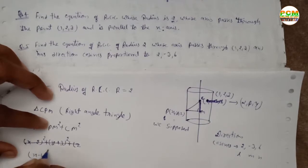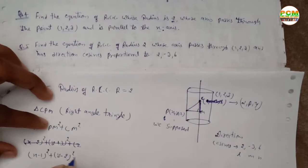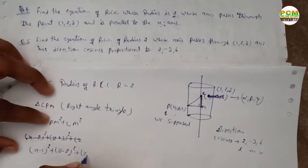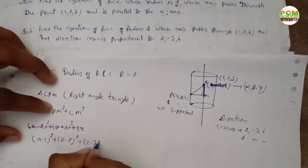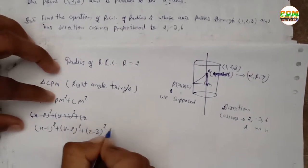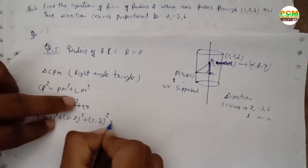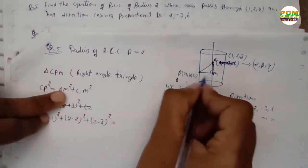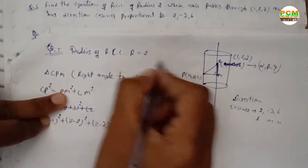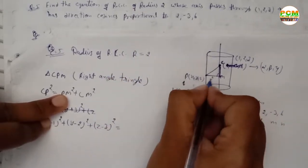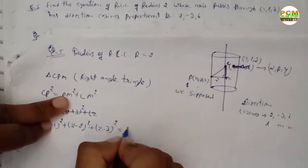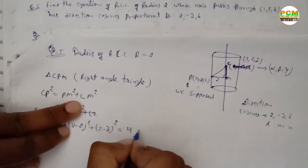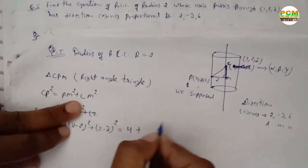So correcting the CP² expression: (x-1)² + (y-2)² + (z-3)². This equals PM² plus CM². PM is the radius, which is 2, so PM² = 4.